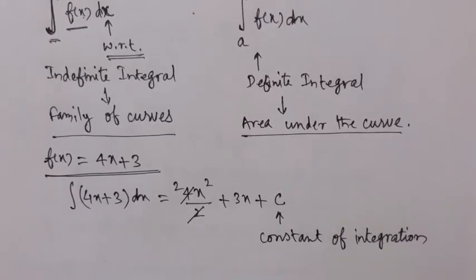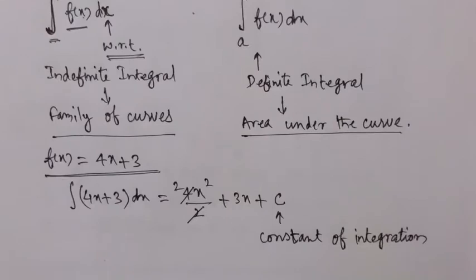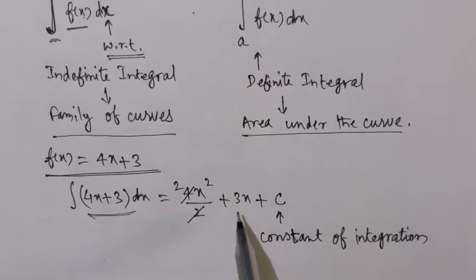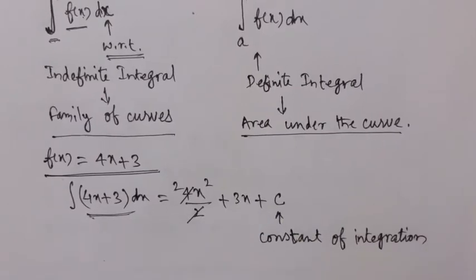We have the constant of integration. Here we have a linear function integrating to a quadratic function — a parabolic equation. If you change the value of c, you can give any real value to c, and as a result you can get any number of its members. That means it is representing a family of curves.